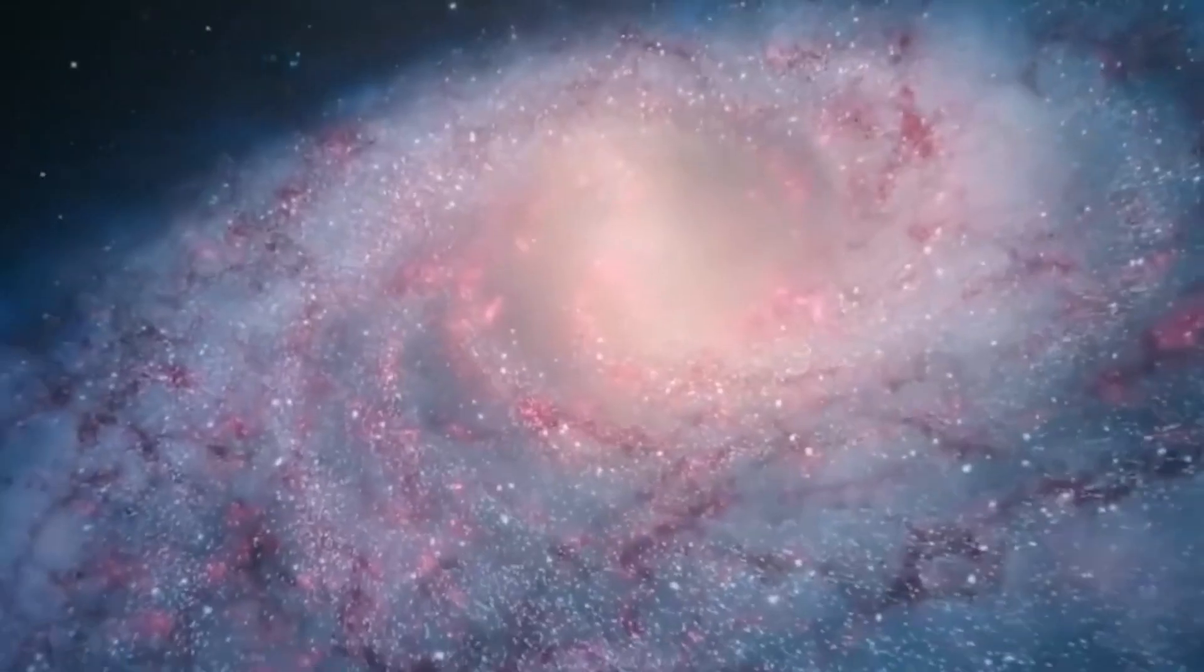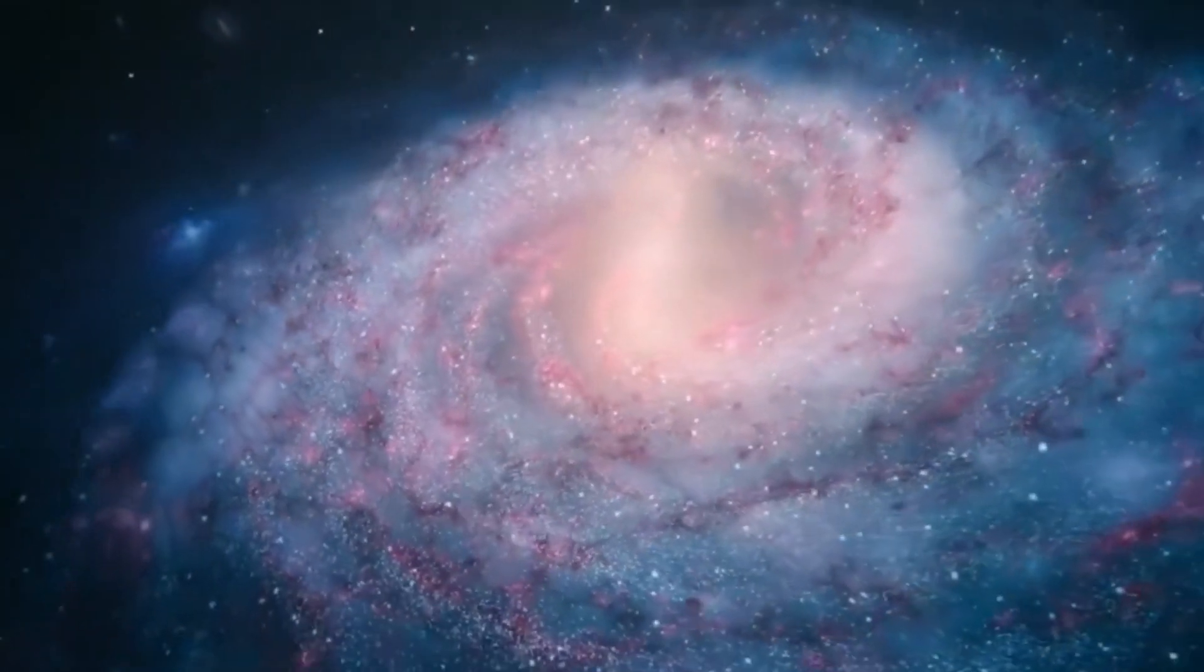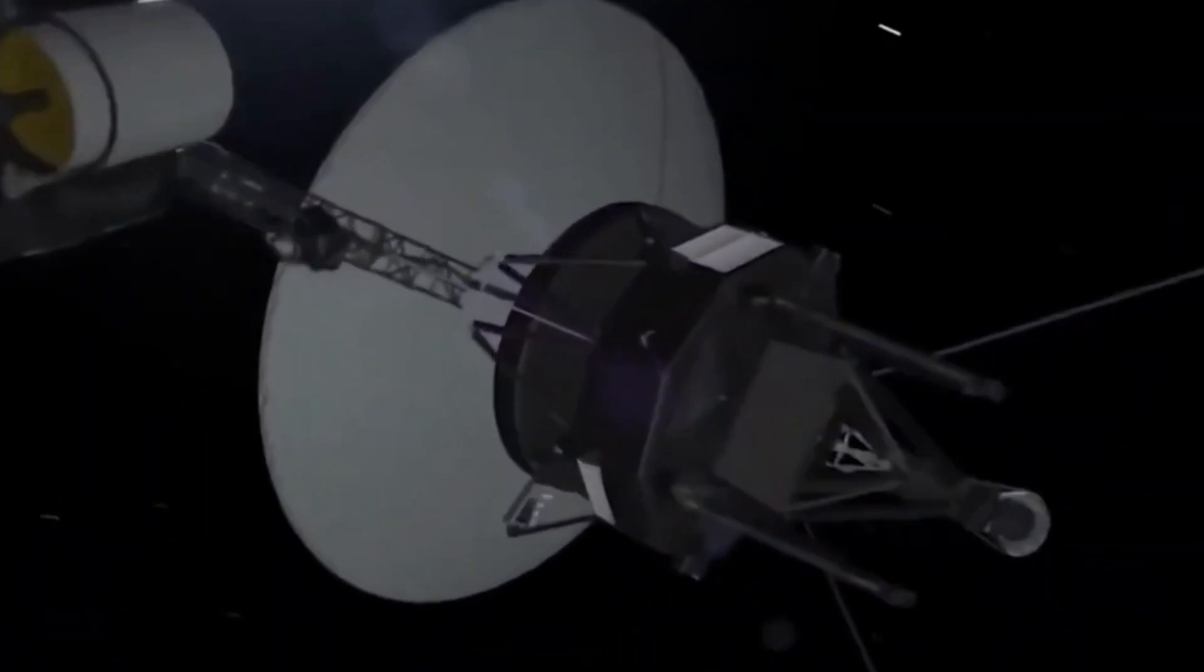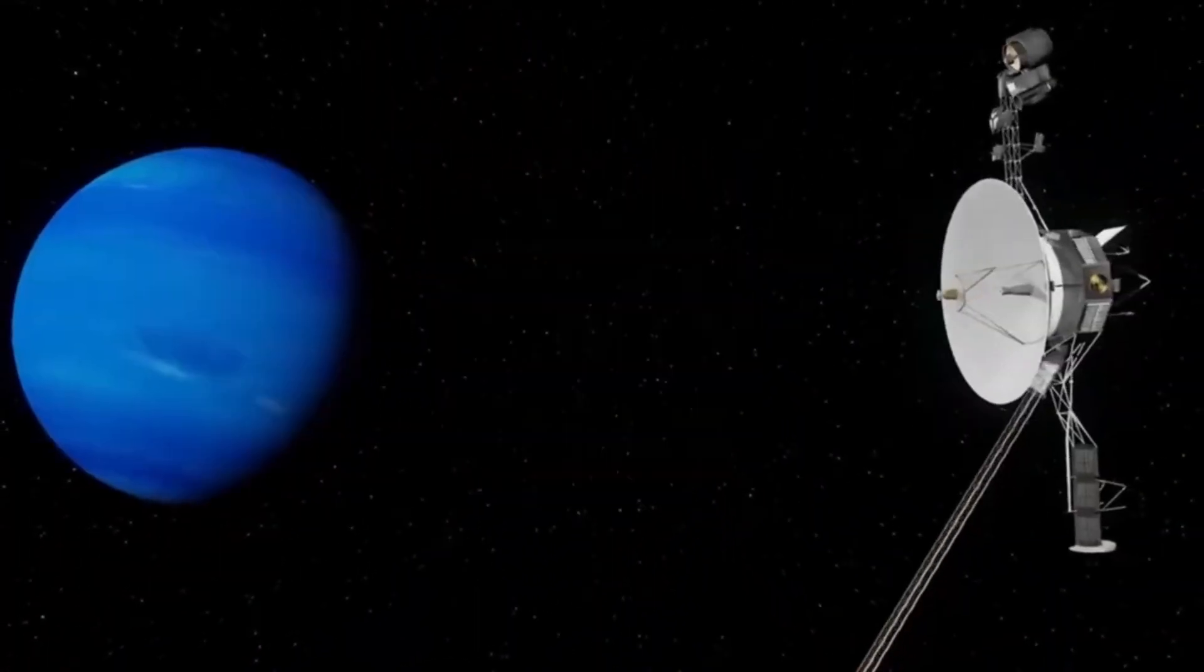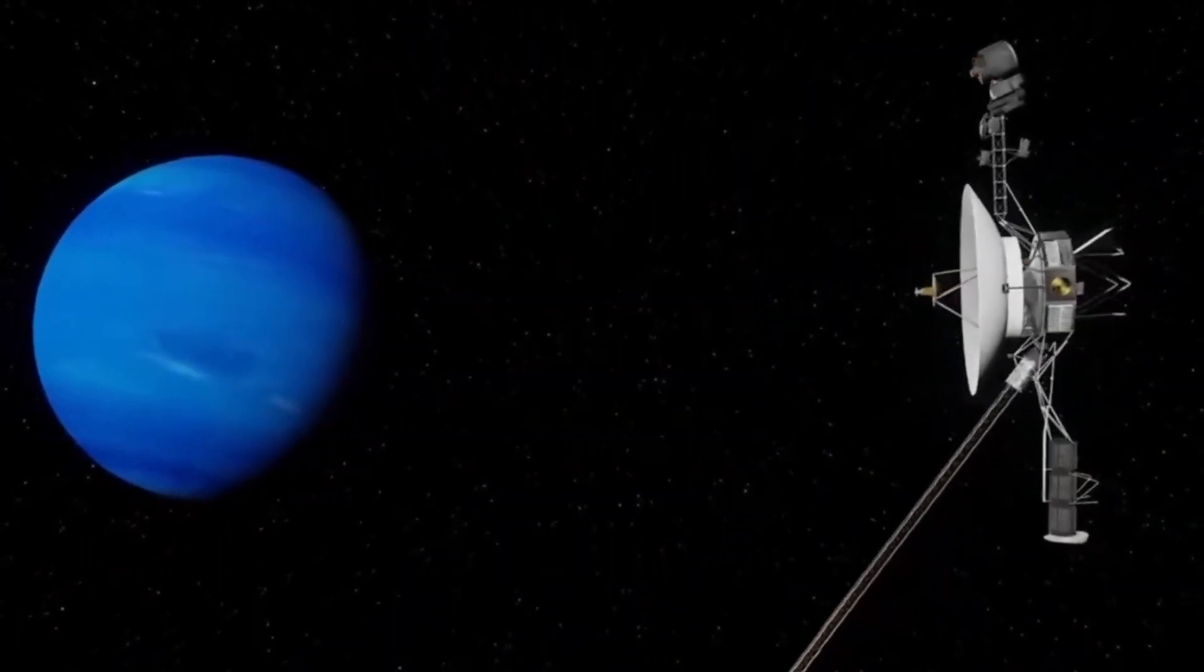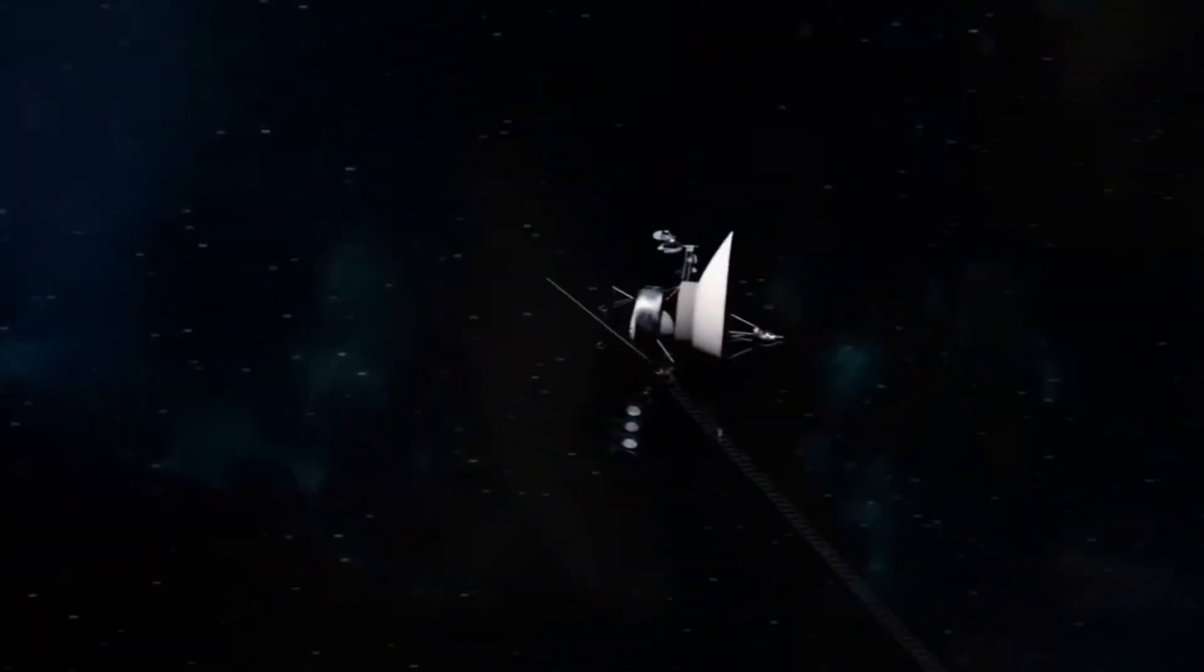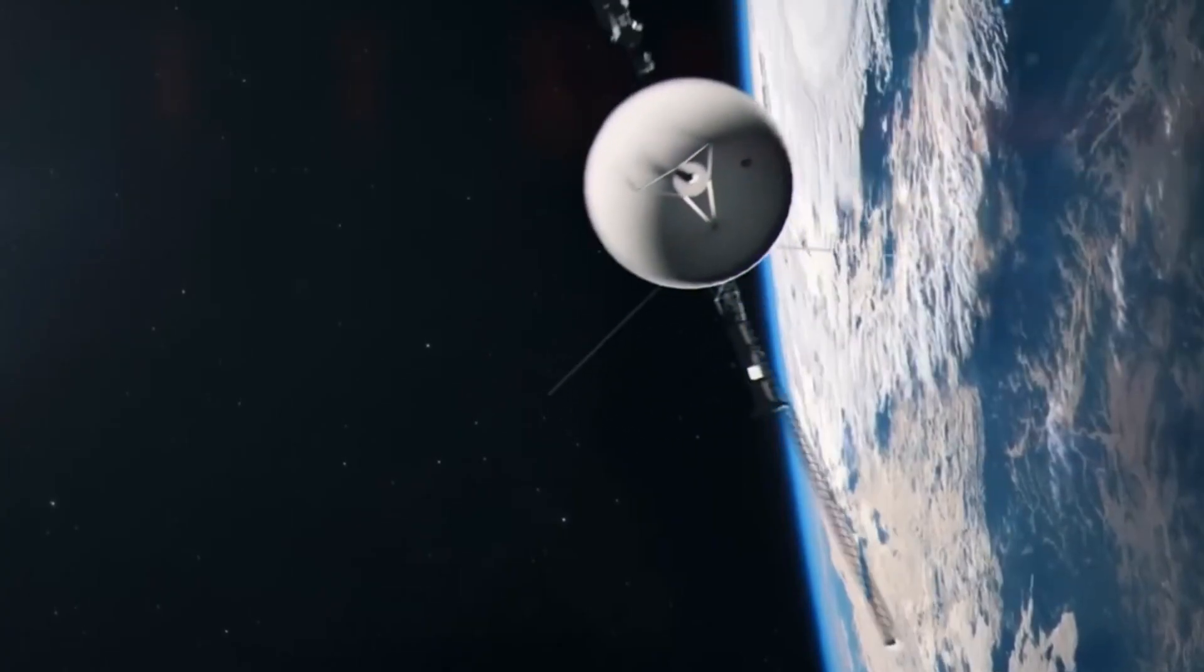Launch Complex 41 at Cape Canaveral Air Force Station launched a Titan III launch vehicle with the Voyager 1 probe on September 5, 1977. The Voyager 2 probe was launched on August 20, 1977, two weeks prior. Voyager 1 took a shorter route and reached Jupiter and Saturn before Voyager 2, despite being launched later.